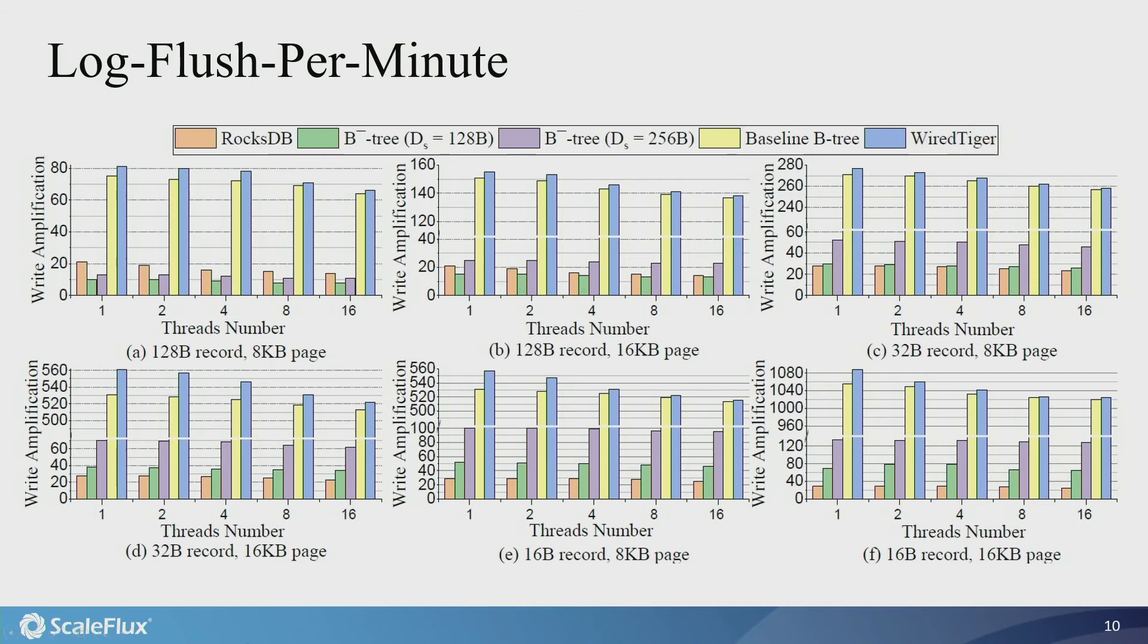So we first carried out experiments without taking into account the benefits of sparse redo logging by setting the redo log flush process per minute. The dataset we use is 150 gigabytes with 1 gigabyte cache memory. We also considered three different record sizes: 128 bytes, 32 bytes, and 16 bytes. We use two different page sizes, 16 kilobytes and 8 kilobytes. DS here is the segment length of localized modification logging.